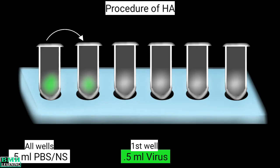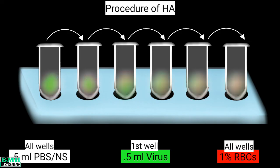To make twofold serial dilutions, we transfer 0.5 ml from the first well to the next well, then to the third, the fourth, and so on. Then we add 1% washed RBCs to each well, and all wells are mixed by tapping the plate gently.